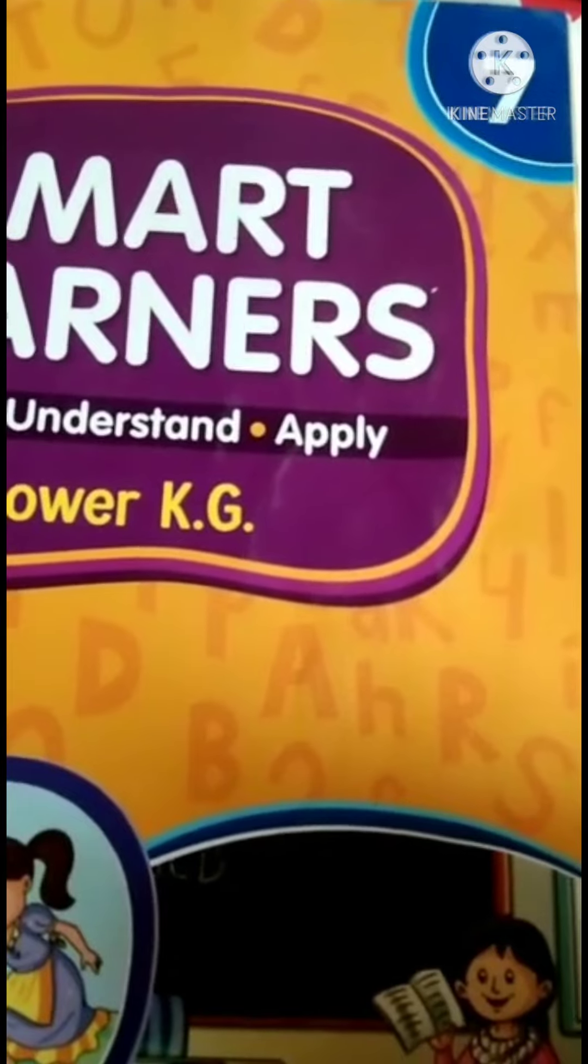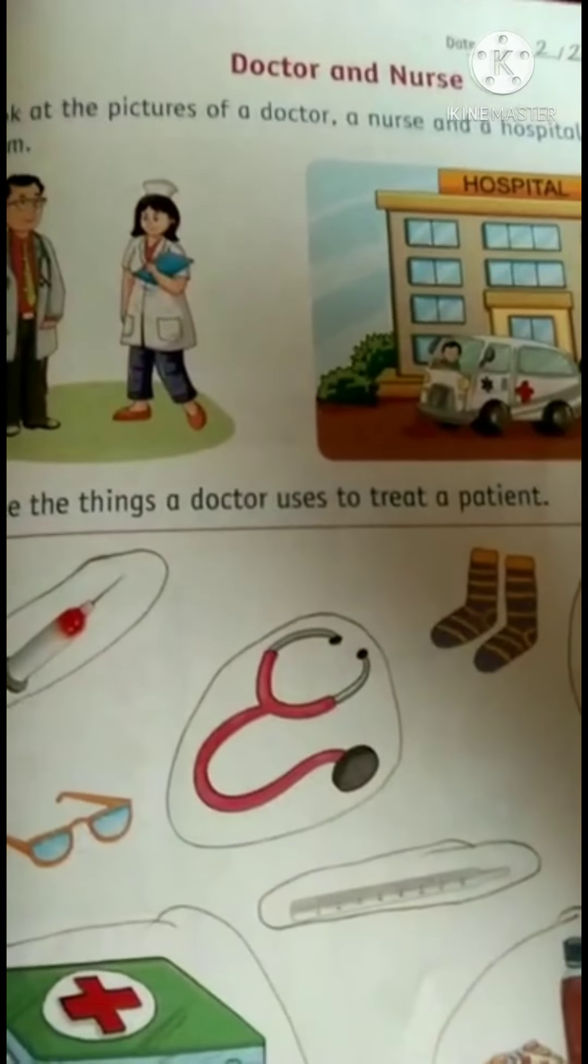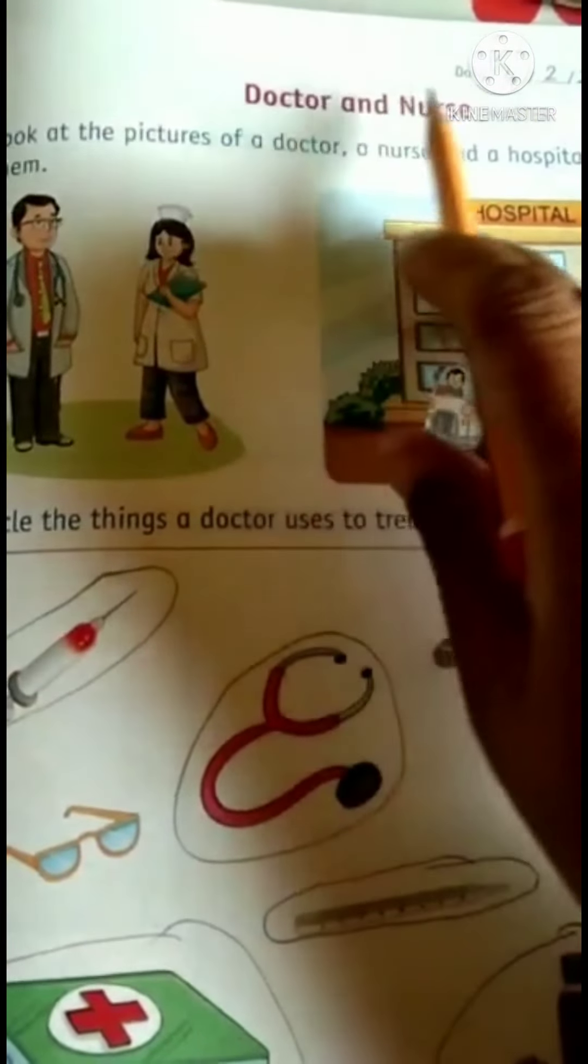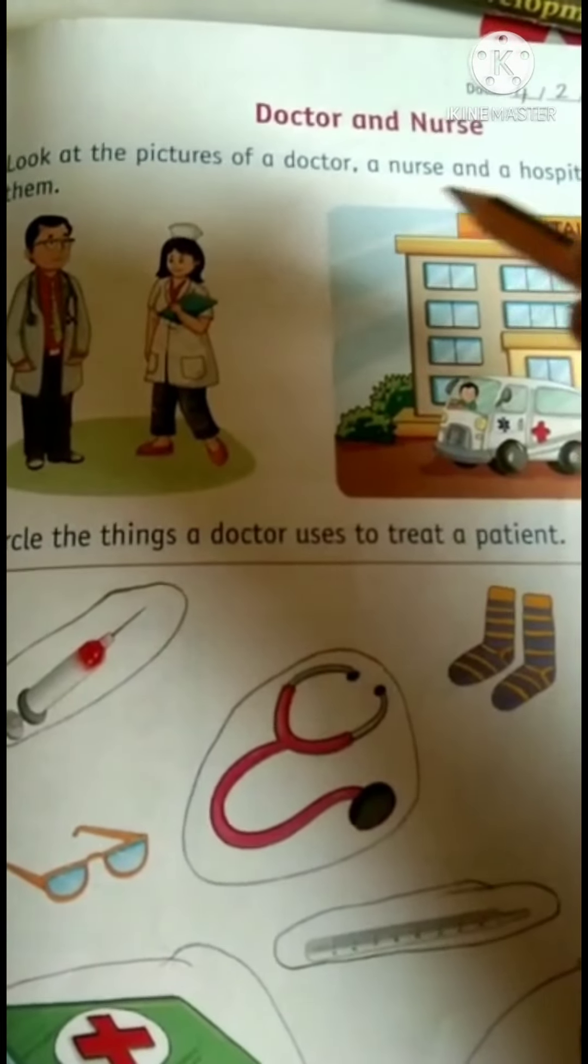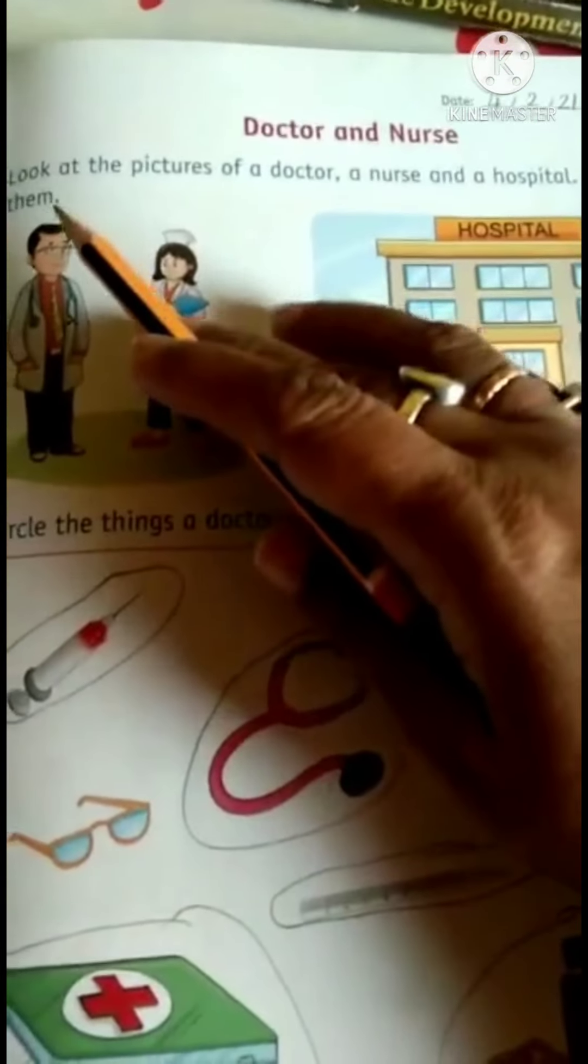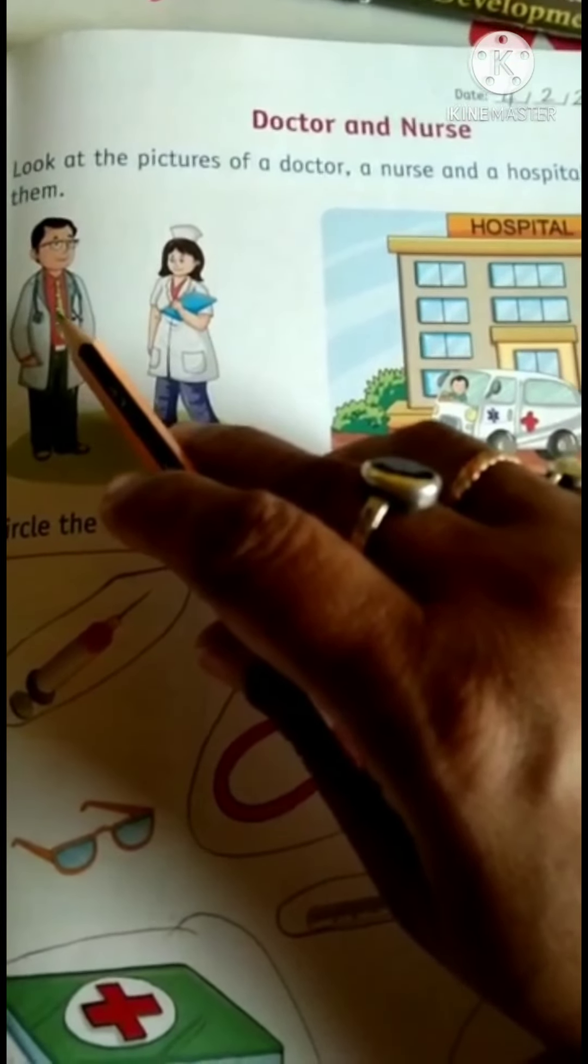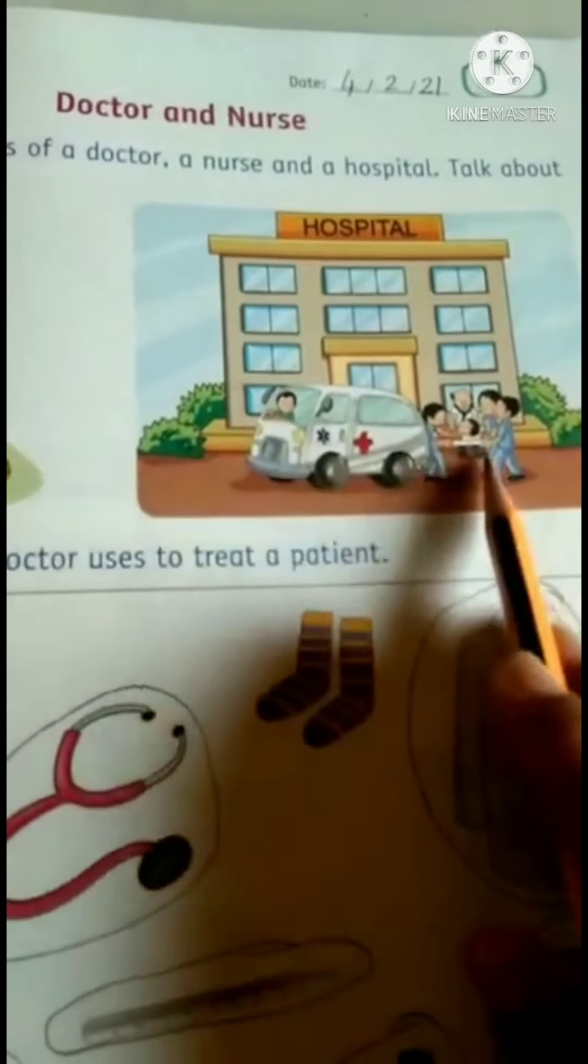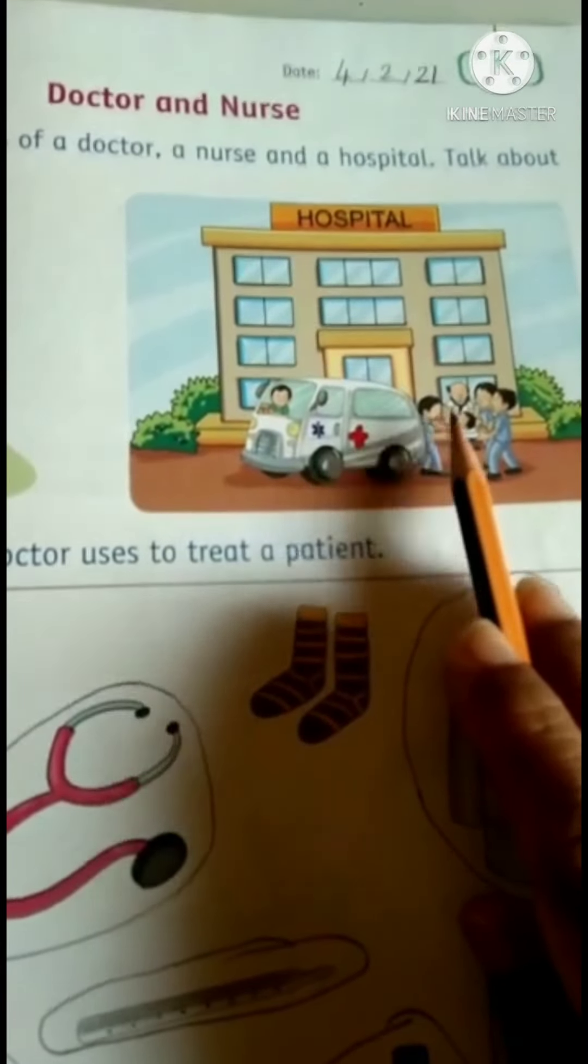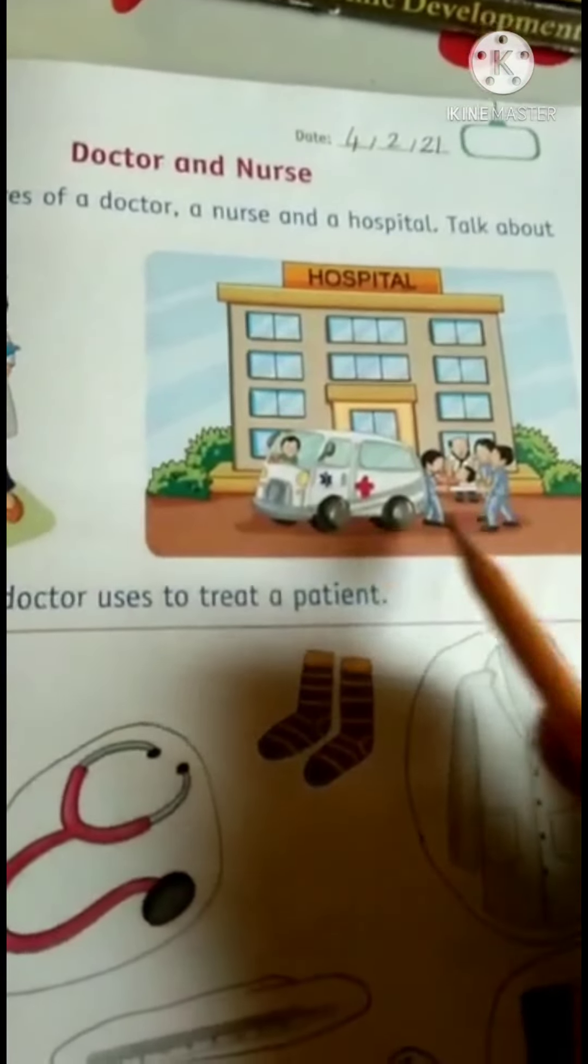See kids, in book number 7, on page number 51, we will learn about one more helper. See, doctor and nurse. They also help us. Look at the pictures of a doctor, a nurse, and a hospital. Talk about them. See, she is a nurse and he is a doctor. Now this one is a hospital. We can see an ambulance driver, a stretcher, a patient, many ward boys, and a doctor too. Please repeat all the names.